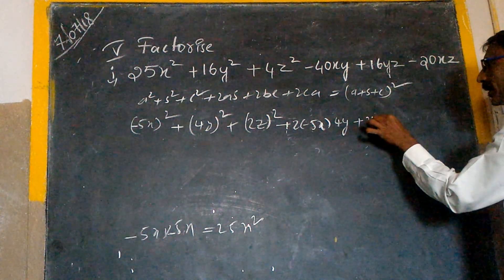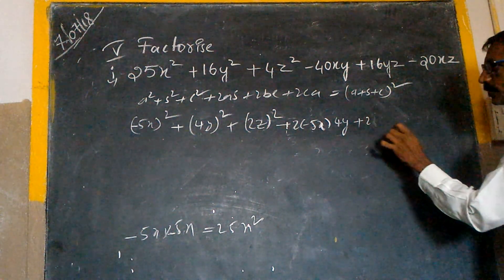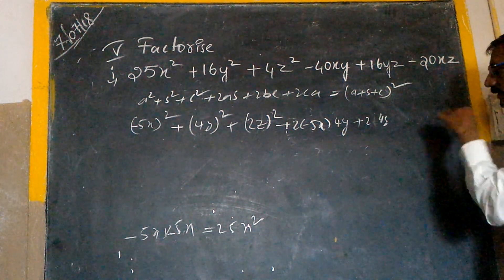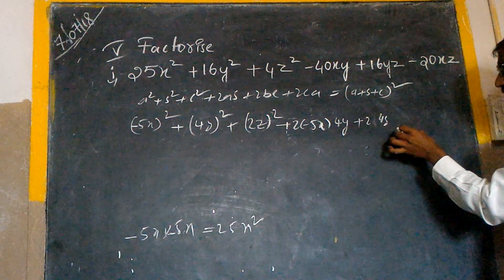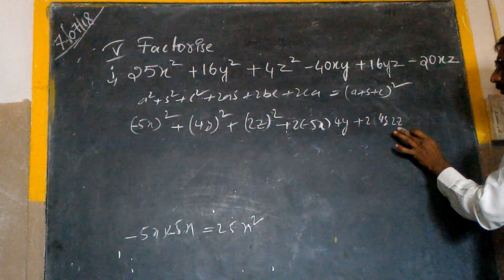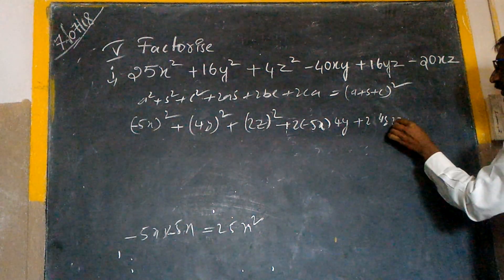2bc, right? What is my b? 4y. Next, what is my c? 2z.